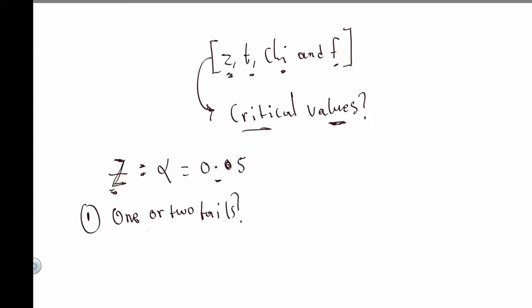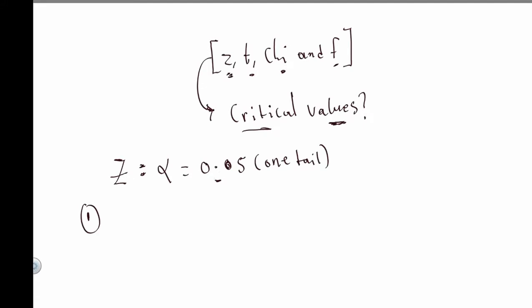After finding that, we go to the table and find the z value for 0.05. For a one-tail test with alpha 0.05, what we do is subtract it from 1: 1 minus 0.05 gives us 0.9500. Because we are dealing with a one-tail test, we subtract it directly from 1.